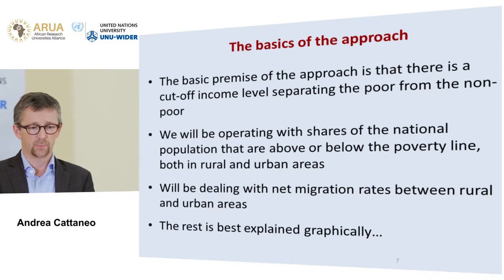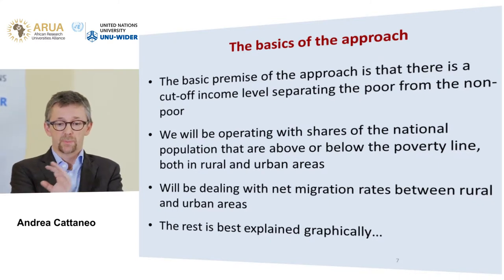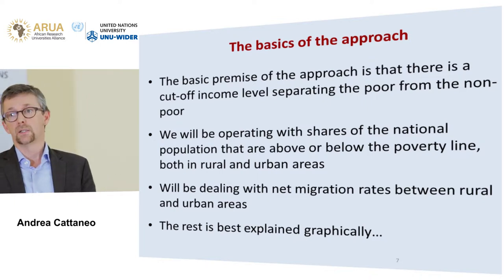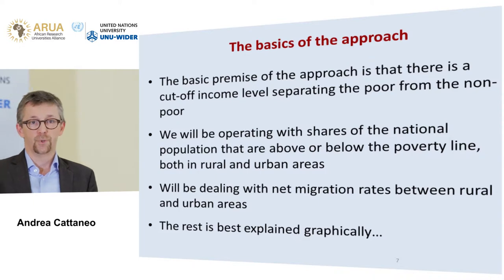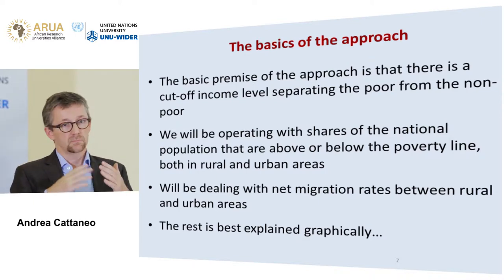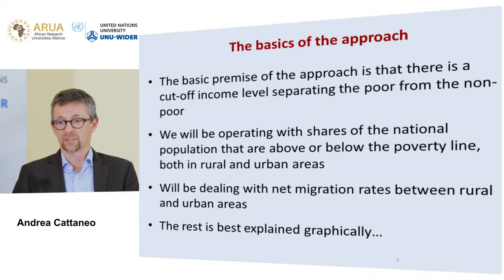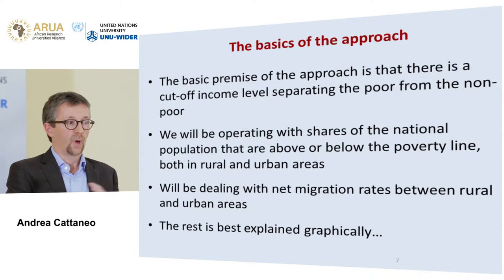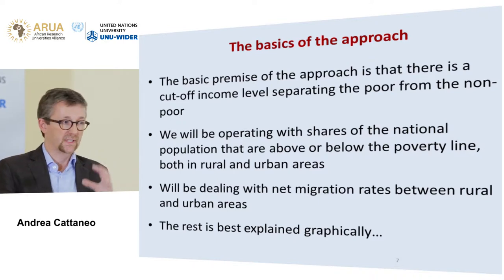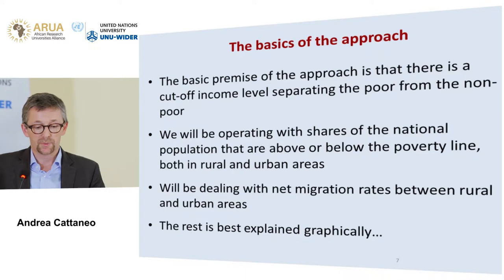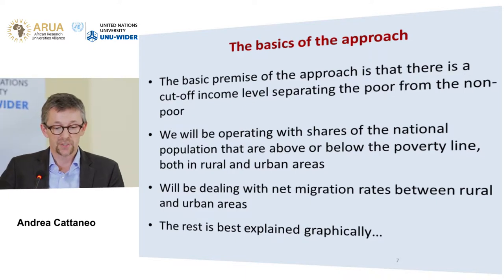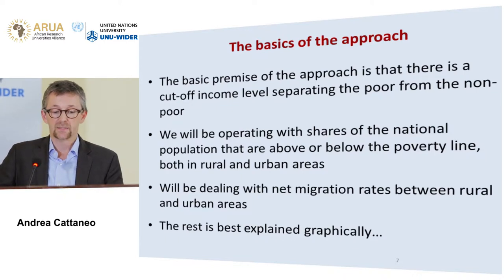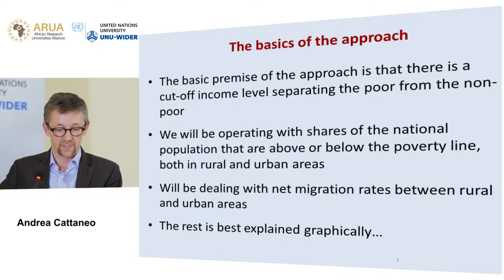The basic premise of the approach is that there is a cutoff income level separating the poor from the non-poor when it comes to the incentive to migrate. If you are below the moderate poverty line, you're in the category that would like to be above it. So it depends on the breakdown of rural and urban population in these two categories — shares above or below the poverty line — and we deal with net migration rates between rural and urban areas.